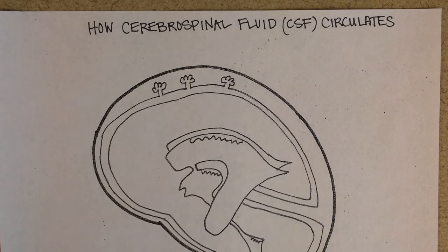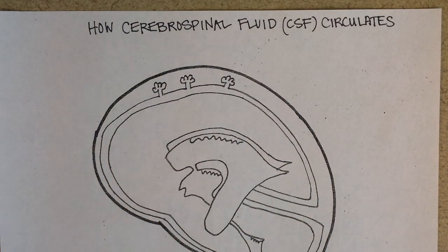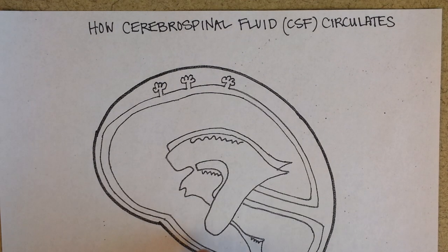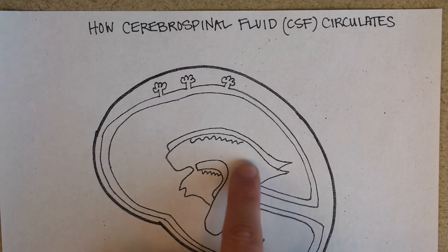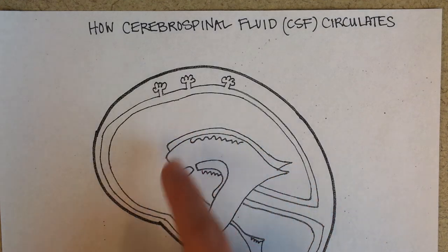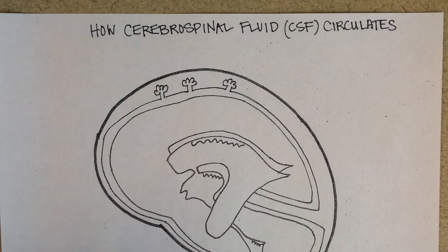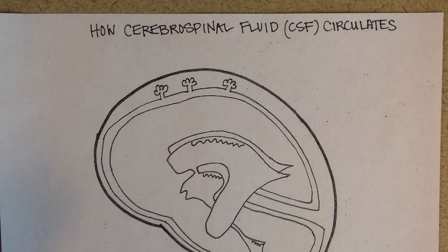Let's go ahead and get started. What you're looking at is a sagittal view of the brain, although I've taken some liberties. What you see here is the lateral ventricle, and then you see the other one behind it. So in our image we can see a little bit of the left and the right cerebral hemisphere.